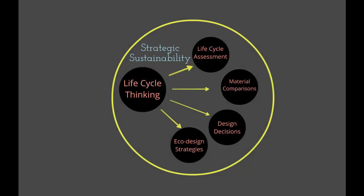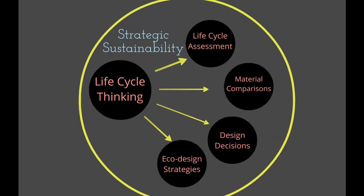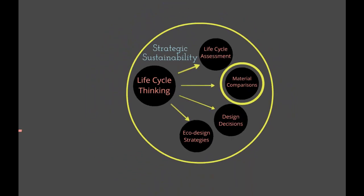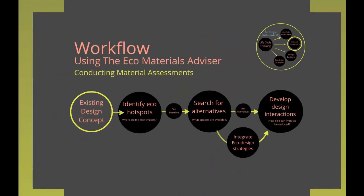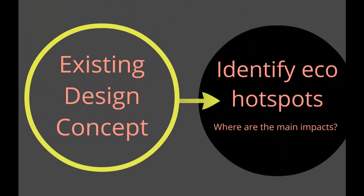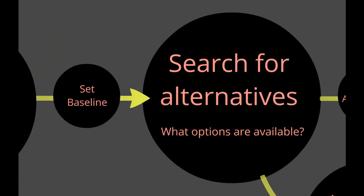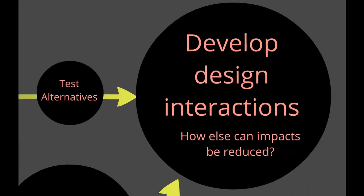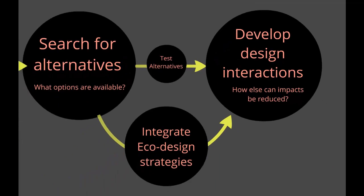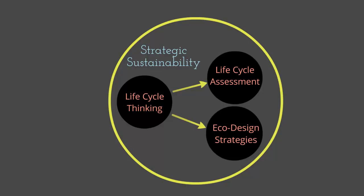A recommended workflow for product designers and engineers is to integrate the use of a streamlined assessment tool into the design process to initially find out where environmental hotspots are occurring in product design and material choice. Once an environmentally preferable design outcome has been achieved, you can then start to look at developing more strategic decision making such as introducing life cycle thinking and eco design strategies. Many organizations are now using life cycle assessment as part of their strategic sustainability decision making process.